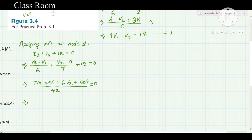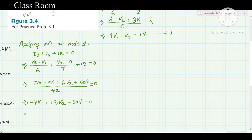So the coefficients are: V1 is −7 and V2 is 13. The equation becomes −7V1 + 13V2 = −504. This is Equation 2.